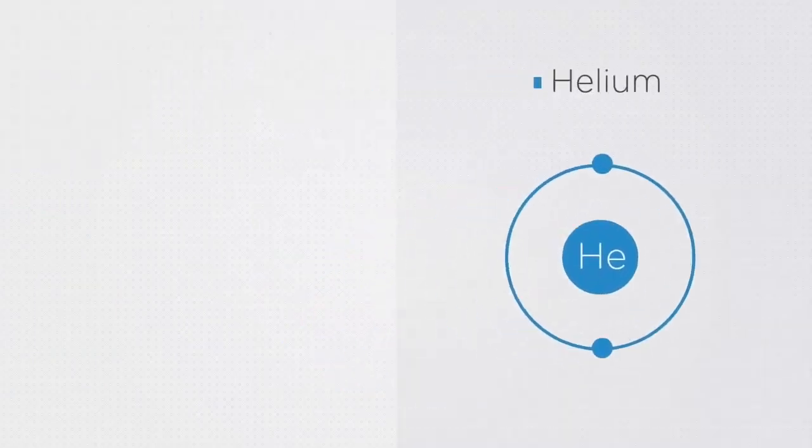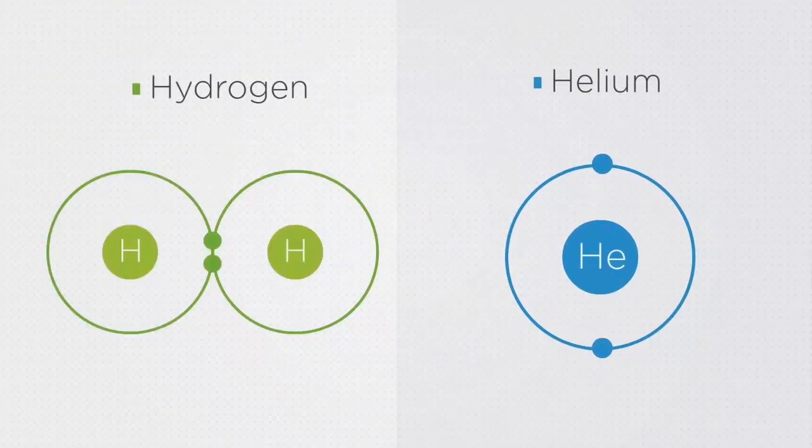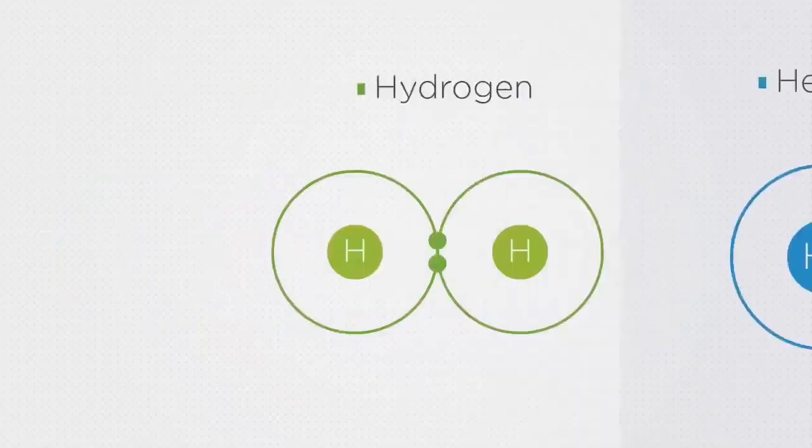As a result of electron sharing, each hydrogen atom now also has two electrons in its outer shell.